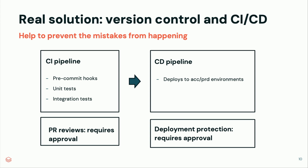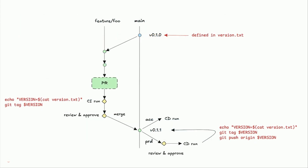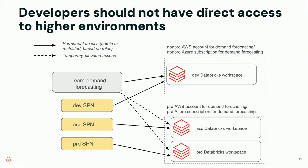You need PR reviews where approval is required to proceed with deployment, and a CD pipeline that deploys to acceptance and production environments with deployment protection. On GitHub you can require approval to deploy to a high environment. A simple setup has one main branch with feature branches, CI pipeline runs with testing and pre-commit hooks, and after approval the code merges to main — triggering deployment to acceptance and then production, tagged with a version.